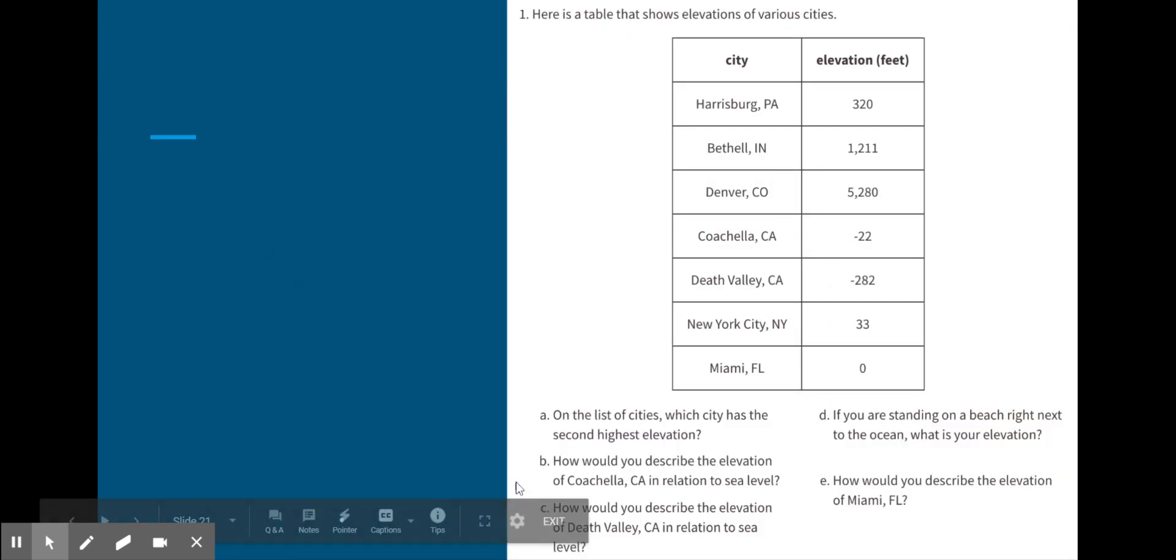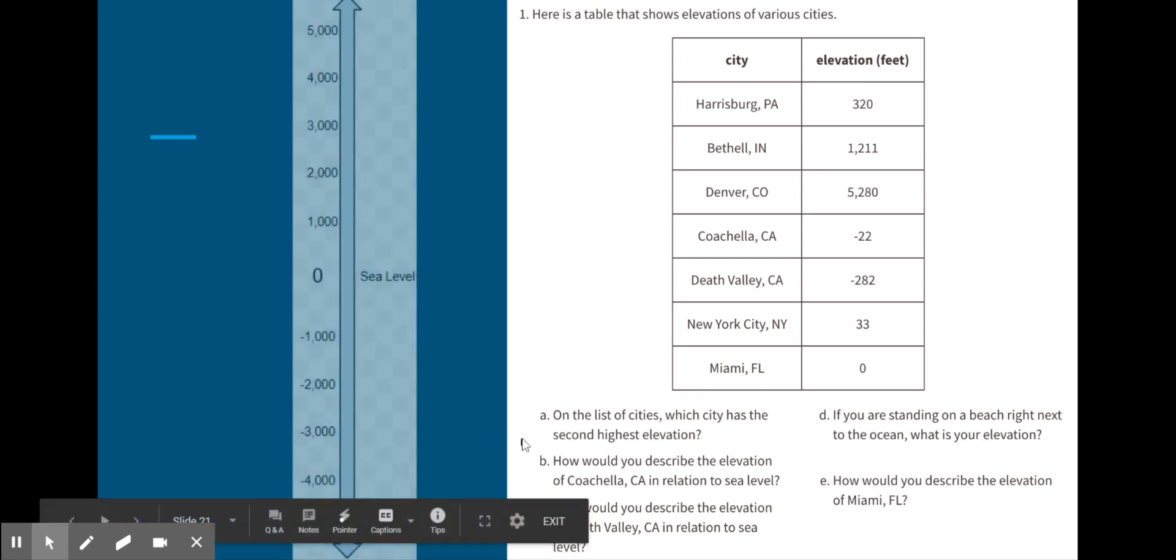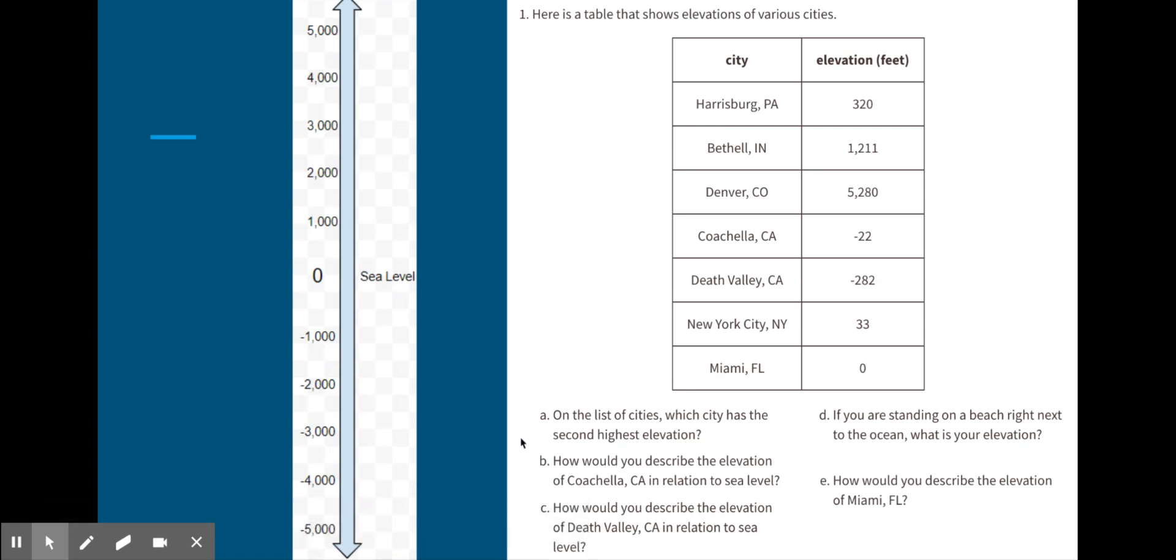Now let's go back to the table that was given to us at the beginning of this lesson. Remember, it's a really good idea to create a vertical number line and plot elevations before you start to compare them. Let's create the number line now, and then you can use the vertical number line to answer the questions for this assignment.